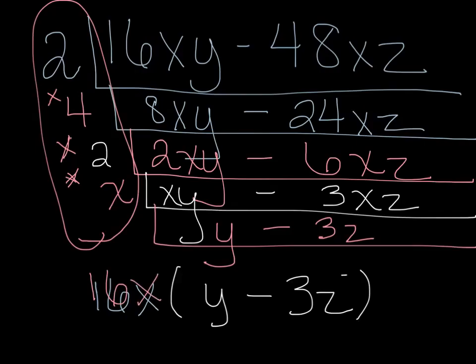Then what do we do with that? We need to take this piece of data, the bottom layer of the cake, that comes straight down into the parentheses, y minus 3z. So the factored version of our expression is 16x times the quantity y minus 3z.